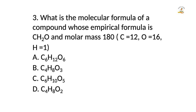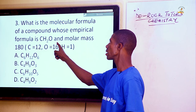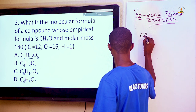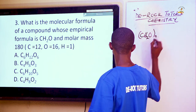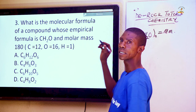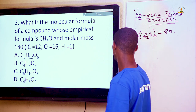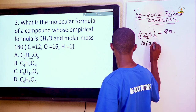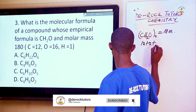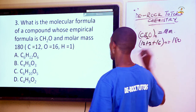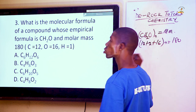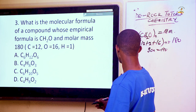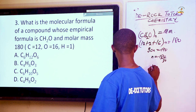Question 3: What is the molecular formula of a compound whose empirical formula is CH₂O and molar mass is 180? We equate the empirical formula in terms of n to the molar mass. Carbon has atomic mass 12, hydrogen is 1 with 2 atoms giving 2, and oxygen has atomic mass 16. Summing 12 + 2 + 16 = 30. So 30n = 180, giving n = 6.